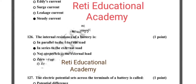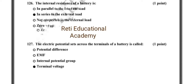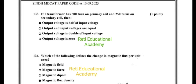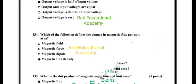Question number 127: the electric potential set across the terminals of a battery is called, and the correct option is terminal voltage. Question number 133: if a transformer has 500 turns on the primary coil and 250 turns on the secondary coil, then the correct option is output voltage is half of input voltage.